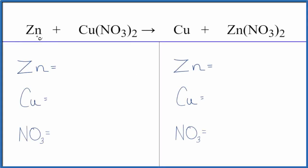To balance this equation, Zn plus Cu(NO₃)₂—that's zinc metal plus copper(II) nitrate